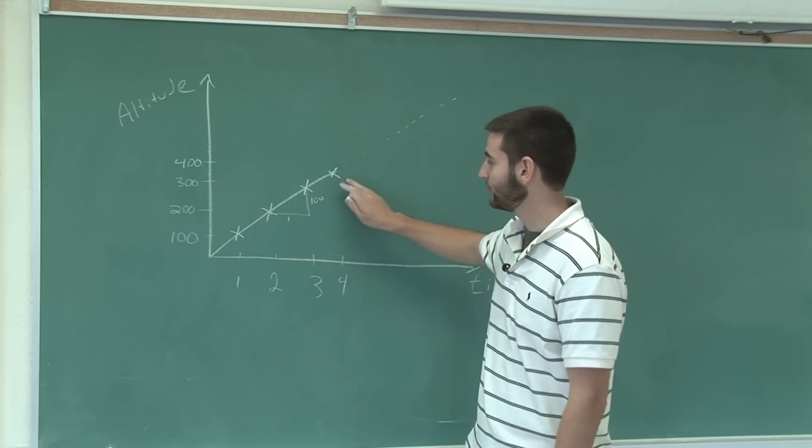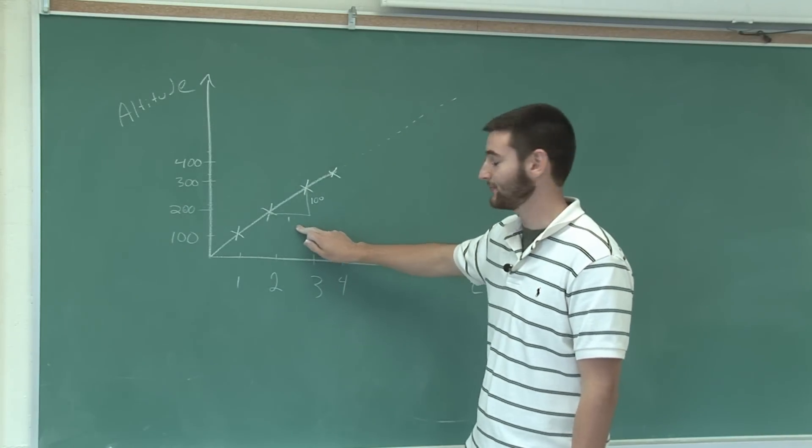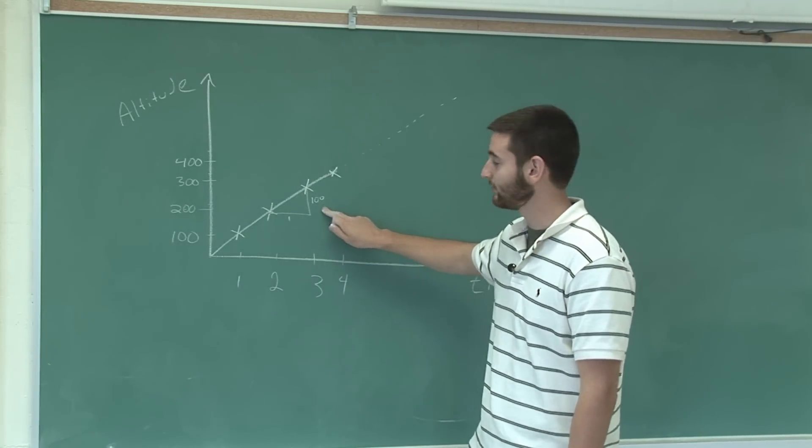So what I've done here is assume that the height varies linearly, which means that for every one second of time elapsed, the rocket will increase its height by 100 feet.